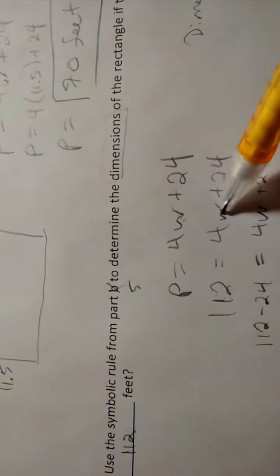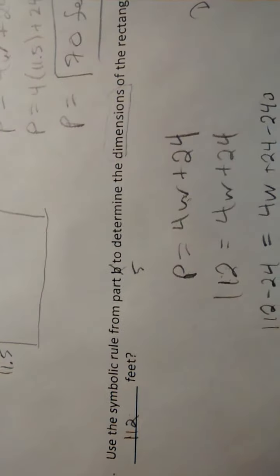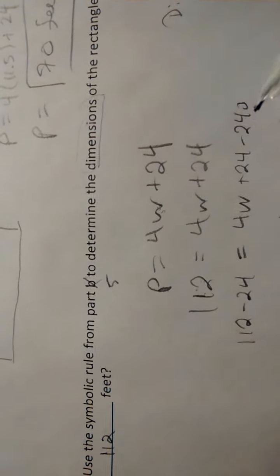All right, so solving this for W will give us the width that produces a perimeter of 112. So we'll subtract 24 from both sides.